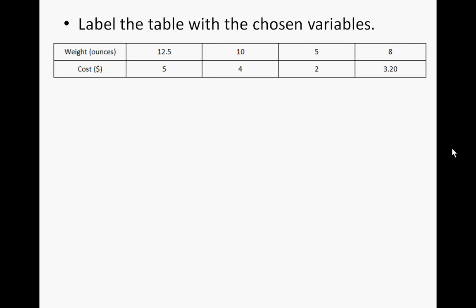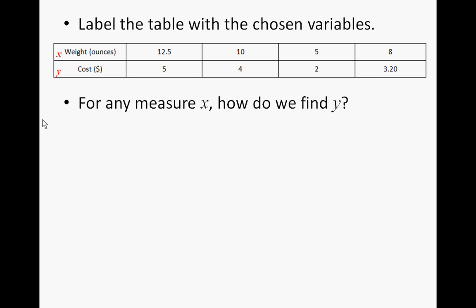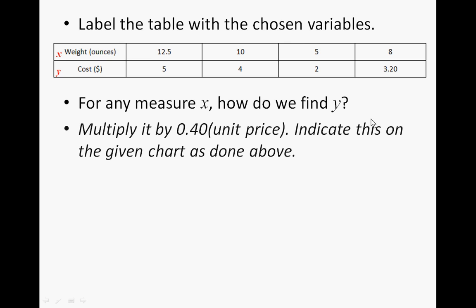Label the table in your lesson worksheet with the chosen variables. Put an X next to the weight, because we're going to represent that with the variable X. And the cost is going to be represented with the variable Y, as you can see here in red. For any measure X, how do we find Y? You need to multiply by 40 cents, because we came up with 40 cents as the unit price. On your lesson worksheet, write times 40 cents and show an arrow to indicate that we're multiplying 12.5 times 40 cents to get $5.